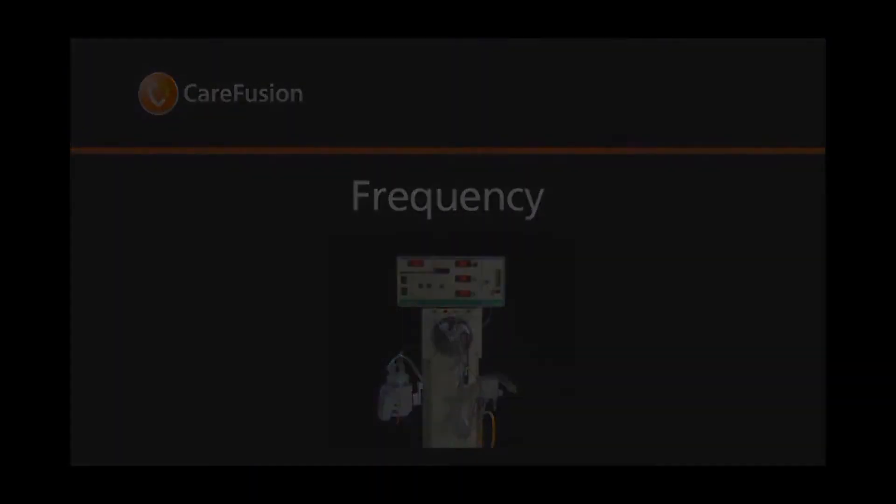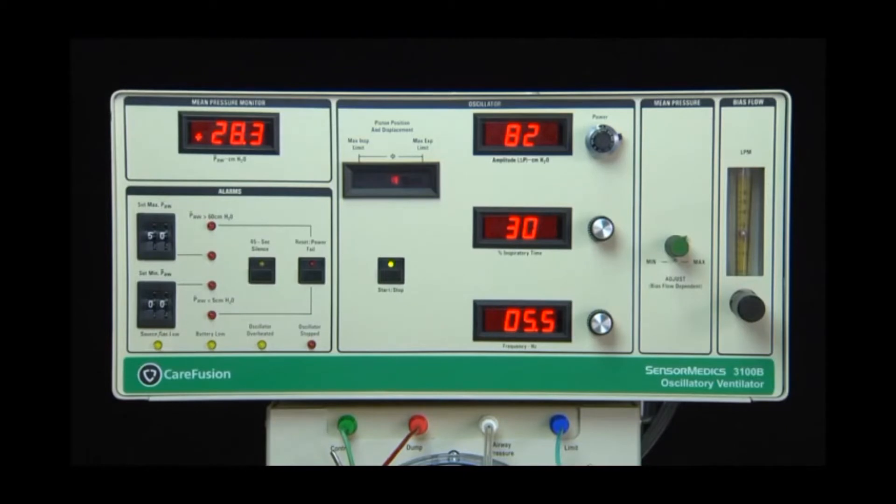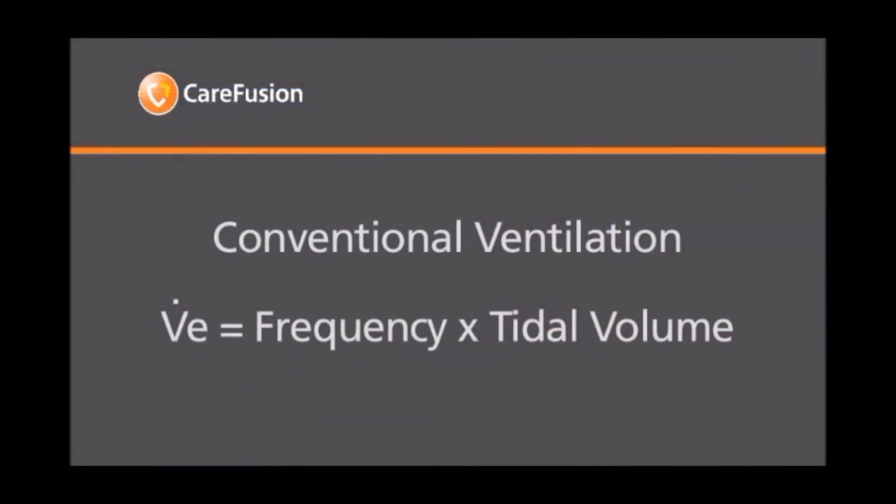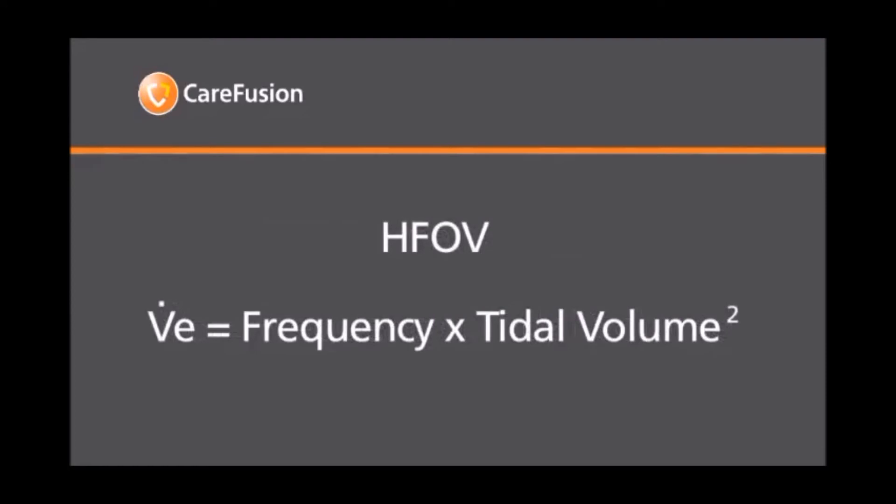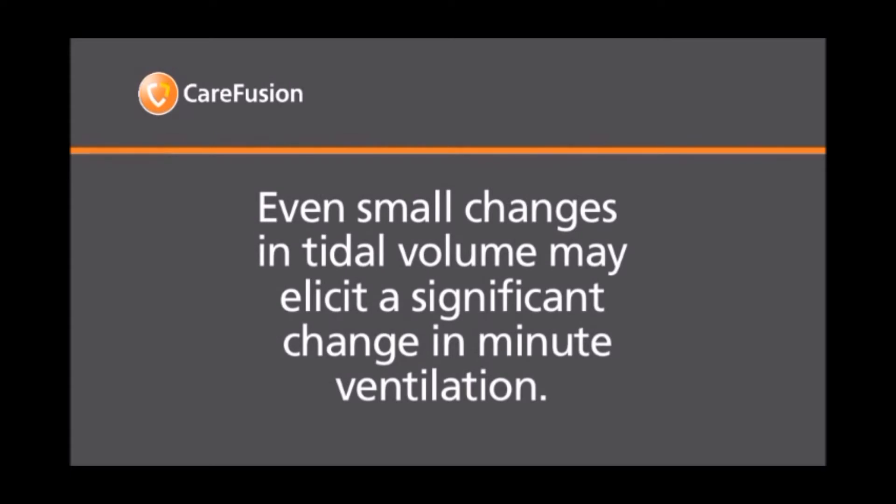The breath rate of the 3100 is expressed in hertz. One hertz is equal to 60 cycles per minute. Typical applications utilize frequencies of 4 to 6 hertz or 180 to 360 breaths per minute. Unlike conventional ventilation, in which minute ventilation is expressed as frequency multiplied by tidal volume, minute ventilation for HFOV is expressed as frequency times tidal volume squared. It's important to understand this relationship since it demonstrates that even small changes in tidal volume may elicit a significant change in minute ventilation.